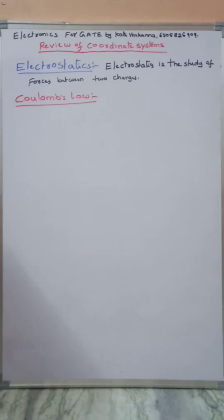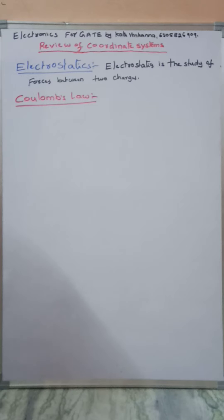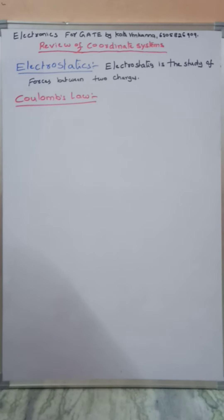Charles Augustin de Coulomb was a French scientist. After conducting several experiments on charged bodies, he concluded that a force exists between them, and he formulated a law known as Coulomb's law.